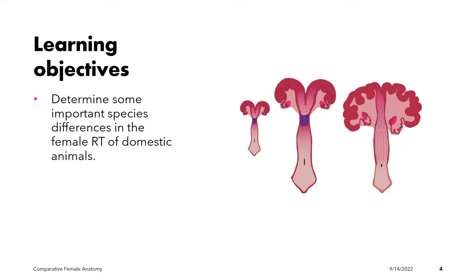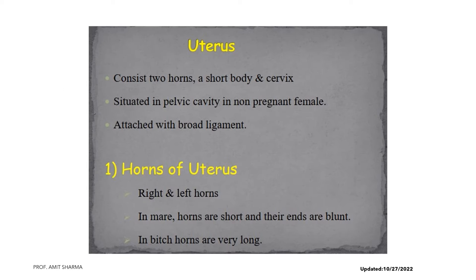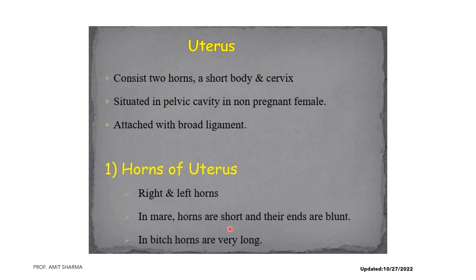This presentation will determine important species differences in the female reproductive tract anatomy of domestic animals, both anatomically and physiologically. A typical uterus consists of two horns, a short body, and a cervix. In the non-pregnant female it is located in the pelvic cavity, attached to the pelvic wall via the broad ligament, known as the mesometrium. In the mare, the horns are short with blunt ends, while in the bitch the horns are very long.